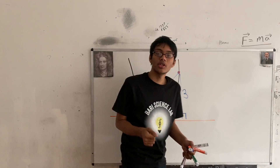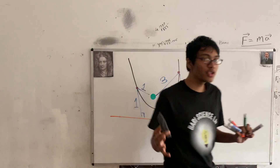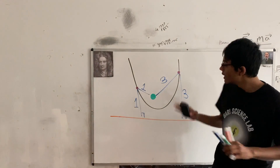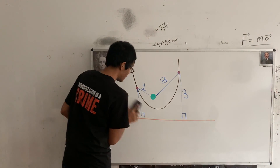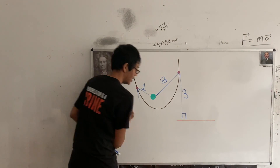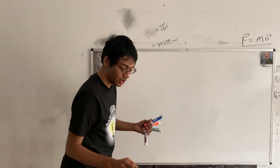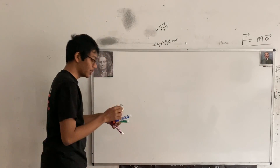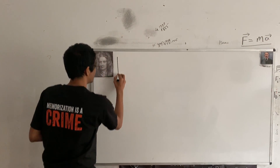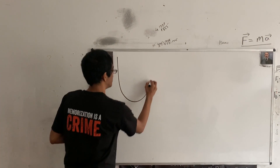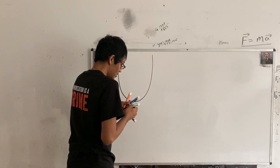Now we're actually going to derive the equation of a parabola using the focus and directrix. We're going to redraw everything and derive the equation just from what we just learned. All you need is two seconds of math and you can derive the equation for a parabola.